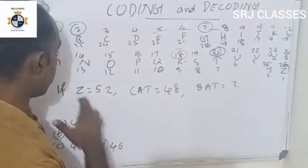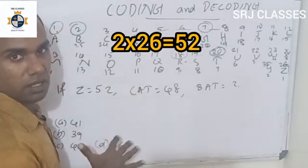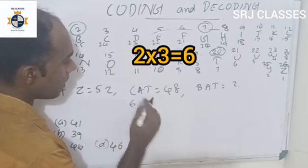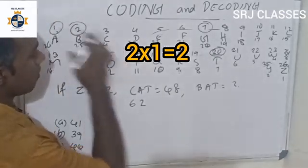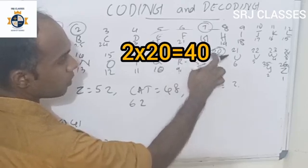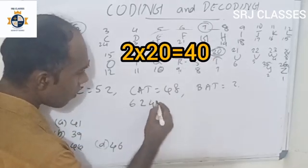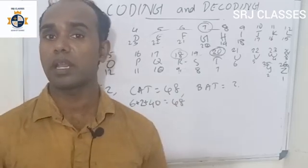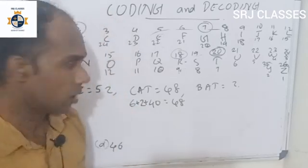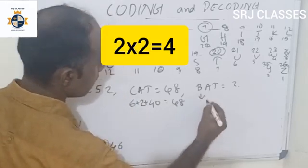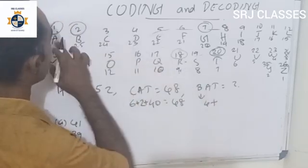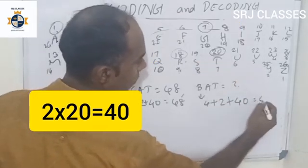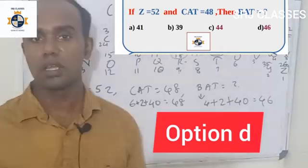What is T2? Double — consider the letter value doubled. That number is doubled. Then C doubled is 6. T=20 doubled is 40. Then the number is 48. The number will be double-double. Then B: B=2, doubled is 4. A=1, doubled is 2. T=20, doubled is 40. Then the number is 46 — Option D. Do you understand this?